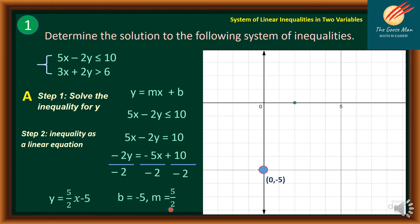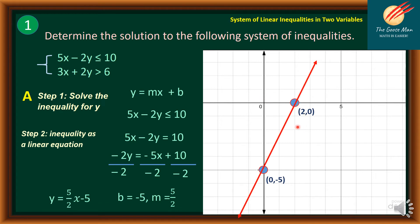On the Cartesian plane, the y-intercept is at (0, negative 5). Using the slope of 5 over 2 — meaning rise over run — we go 5 up and 2 right, giving us the point (2, 0). We connect the two points. Since the inequality is less than or equal to, we use a solid line.